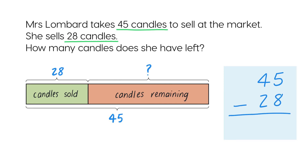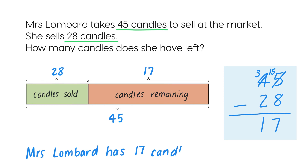Start by subtracting the ones. We cannot subtract 8 ones from 5 ones, so we regroup 1 ten into 10 ones. We now have 15 ones from which we can subtract 8. 15 ones minus 8 ones is 7 ones. Now subtract the tens: 3 tens minus 2 tens is 1 ten. 45 minus 28 is 17. So Mrs. Lombard has 17 candles left.